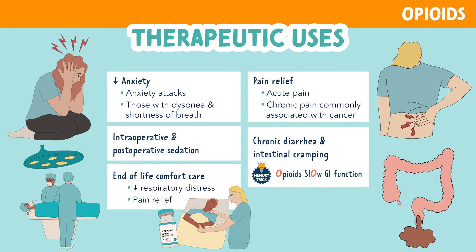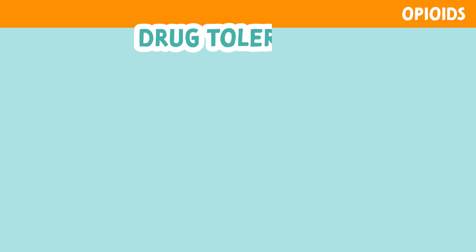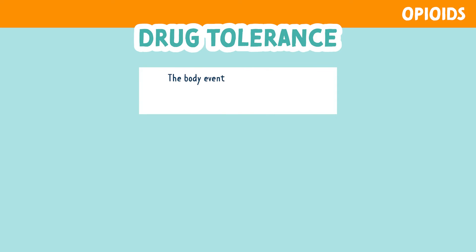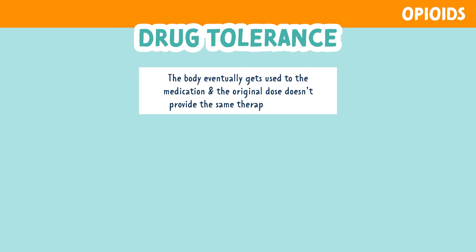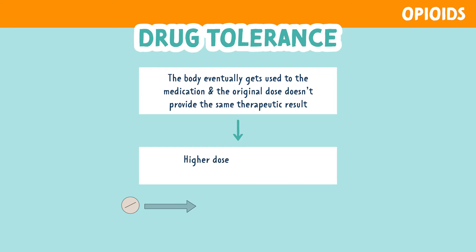All opioid use can result in drug tolerance. This means the body eventually gets used to the medication and the original dose doesn't provide the same therapeutic effect. As a result, a higher dose of medication is needed to achieve the same effect.